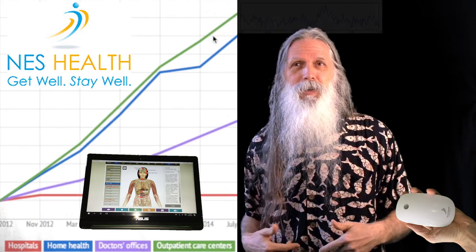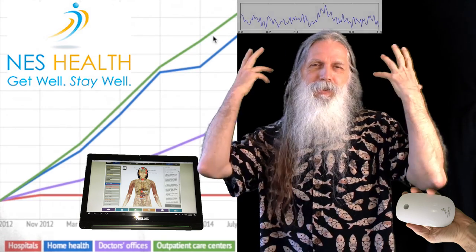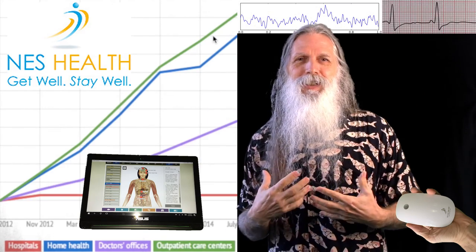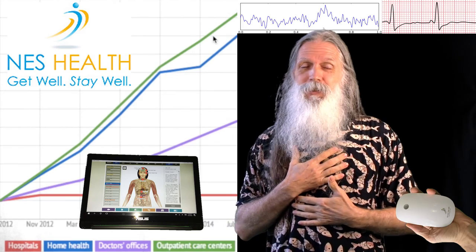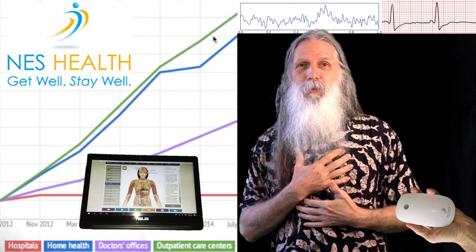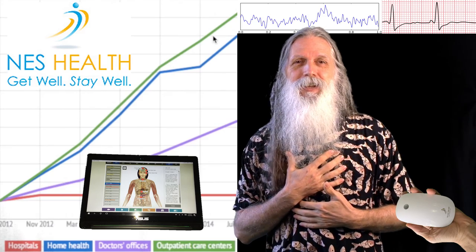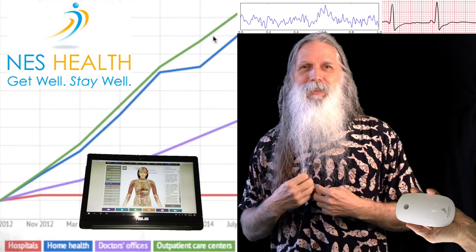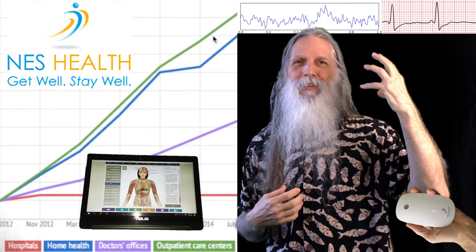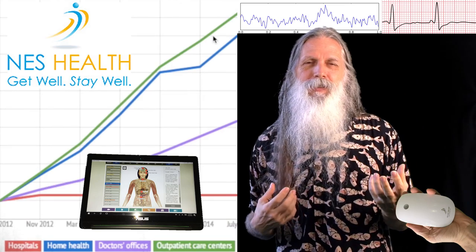We know that the nervous system carries electromagnetic signals. It's how we measure an EEG. The heart has its signaling, and the heart is also part of our information processing and consciousness. In fact, it's really the center.